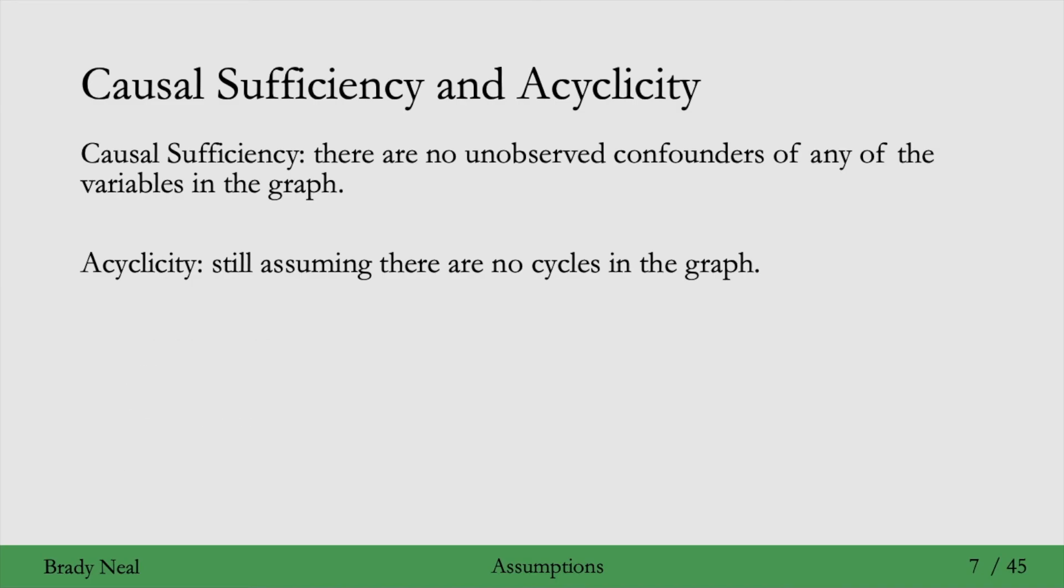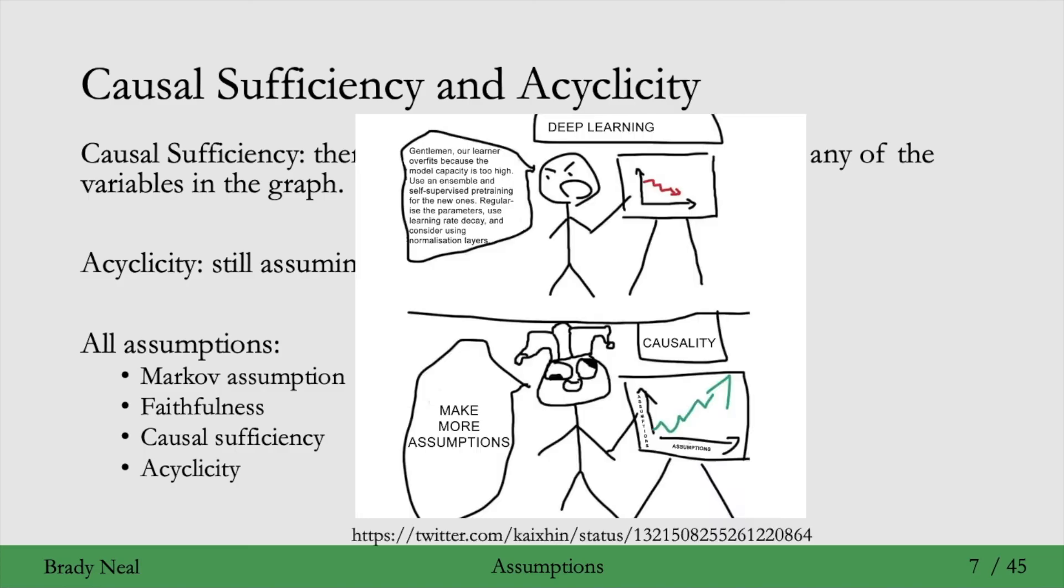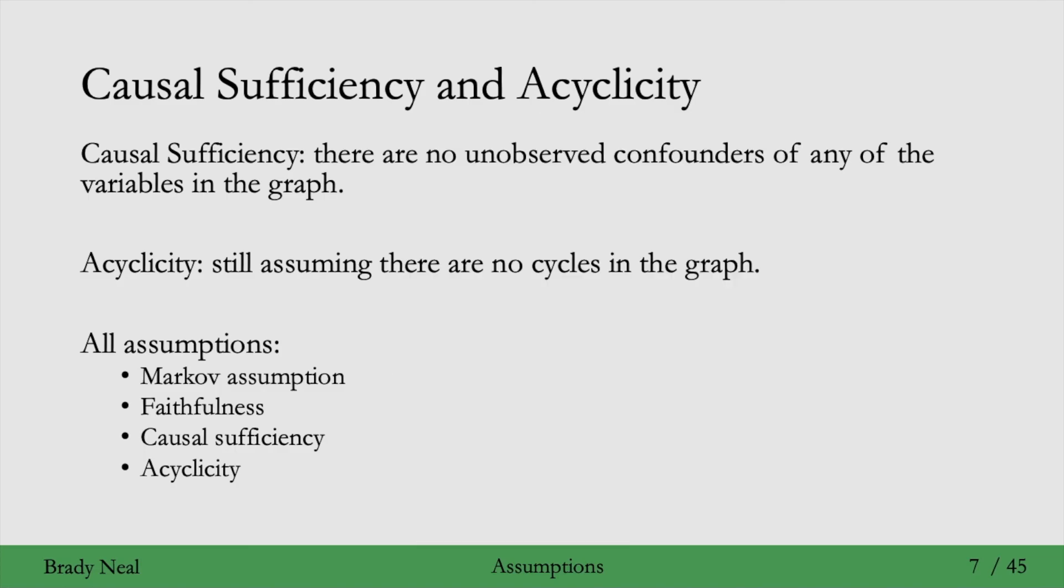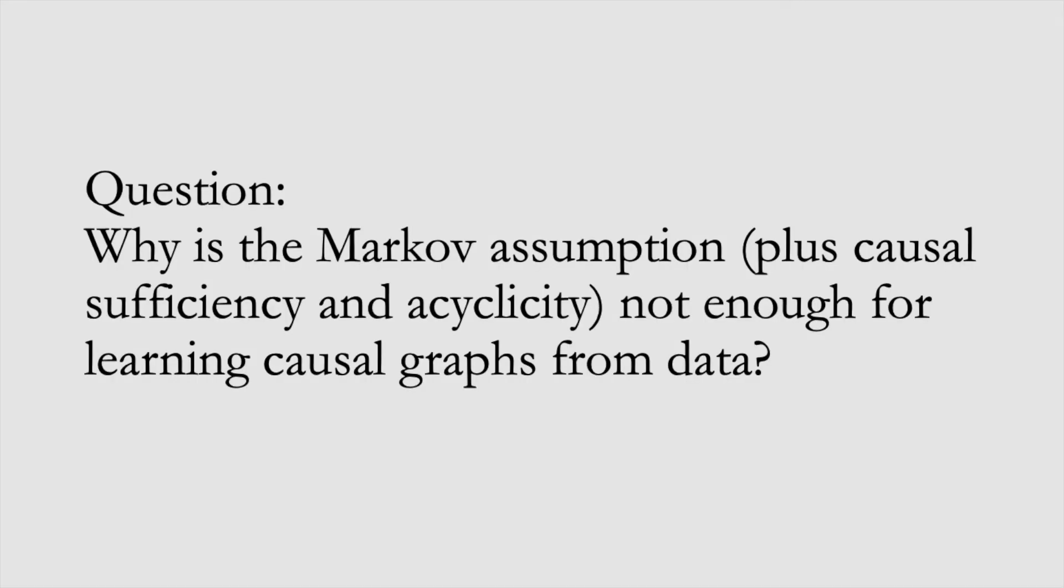Listing all the assumptions together, we have the Markov assumption still, the faithfulness assumption, causal sufficiency, and acyclicity. That brings us to the end of the assumptions section, and to our first question, which is, why is the Markov assumption plus causal sufficiency and acyclicity not enough for learning causal graphs from data?